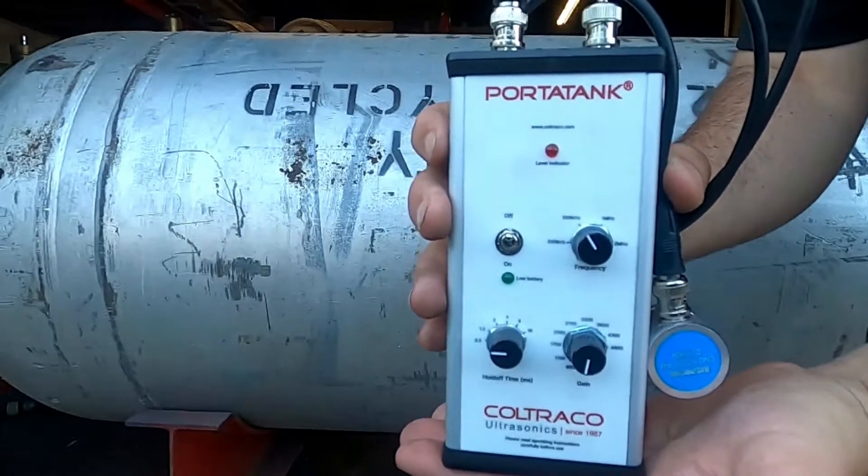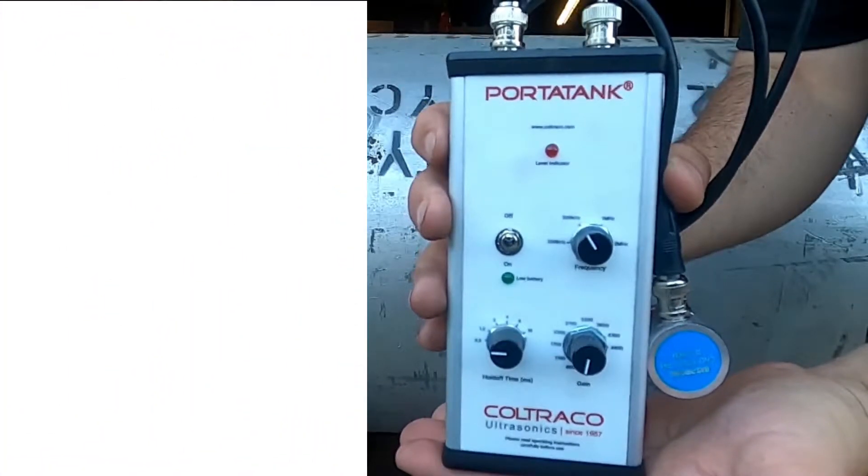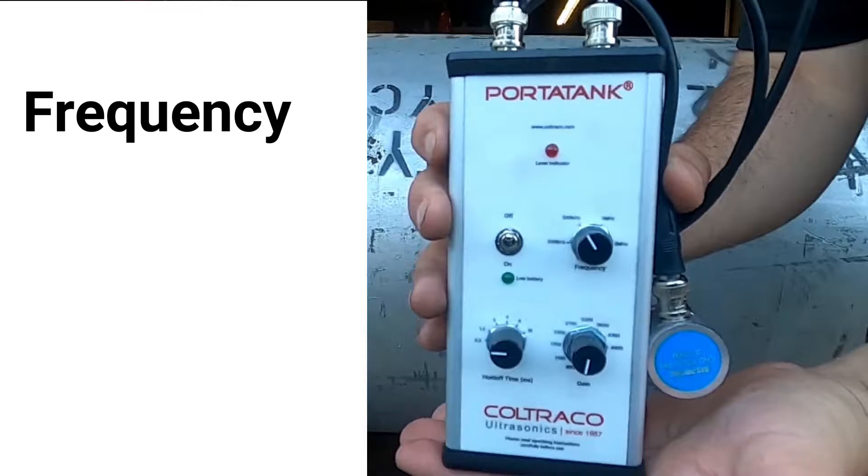Let's take a closer look at the Porta Tank. It has an on and off switch and three additional knobs. The first knob is frequency, which is set in reference to the size of the cylinder that you'll be working with.